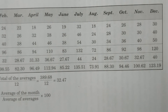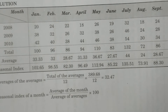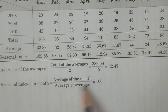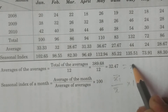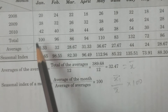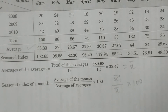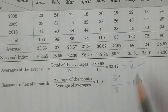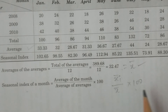Continue calculating for all 12 months up to December. For February, for example, total 96 divided by 3 gives 32. This gives 12 monthly averages. Then calculate the overall average x̄ by summing all 12 monthly averages and dividing by 12. Then apply x̄ᵢ / x̄ × 100 to get seasonal indices.